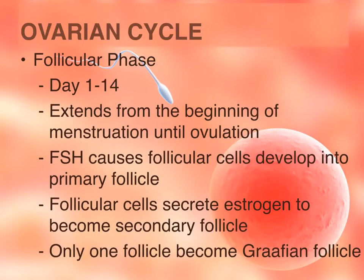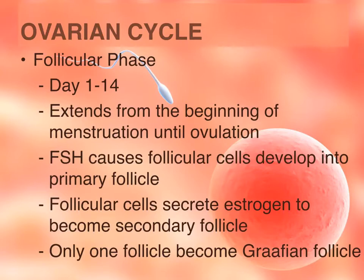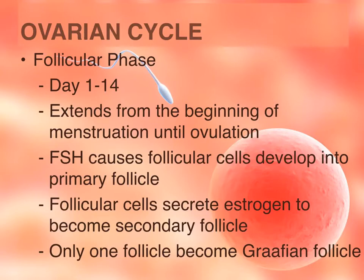The ovarian cycle deals with changes in the ovaries and the development of the follicle and the mature oocyte inside it. The first phase is the follicular phase, where the follicle changes and develops and the oocyte becomes mature inside the follicle. Day one through day 14 makes up the follicular phase — day one starts with the beginning of menstruation until day 14, which is ovulation. Just before the follicle and the oocyte inside it become mature, it is called the Graafian follicle, which is the phase right before ovulation occurs.